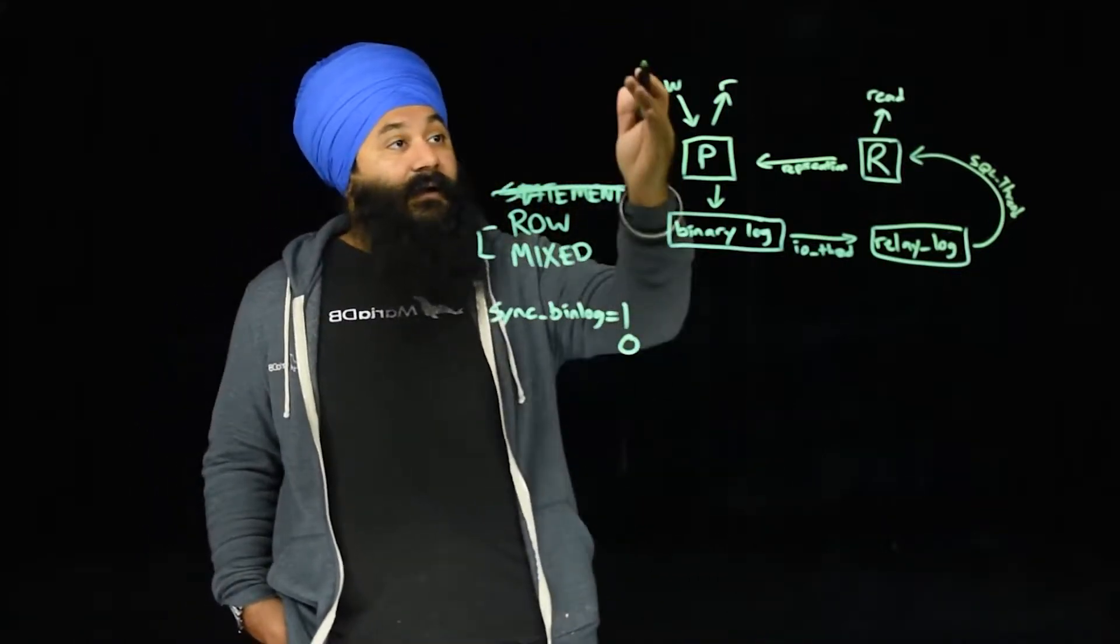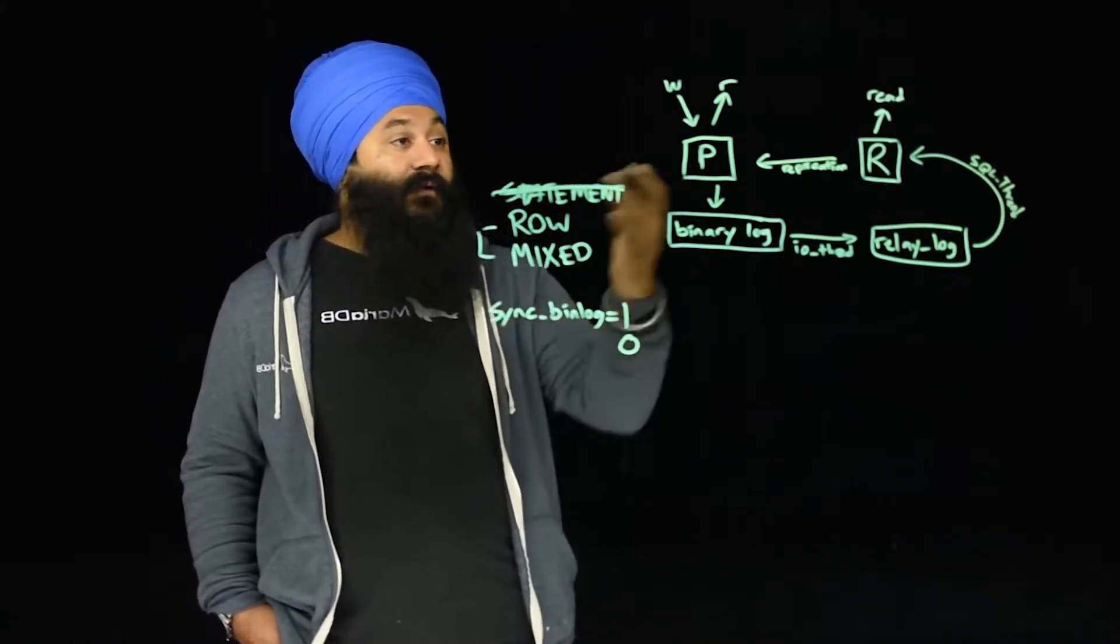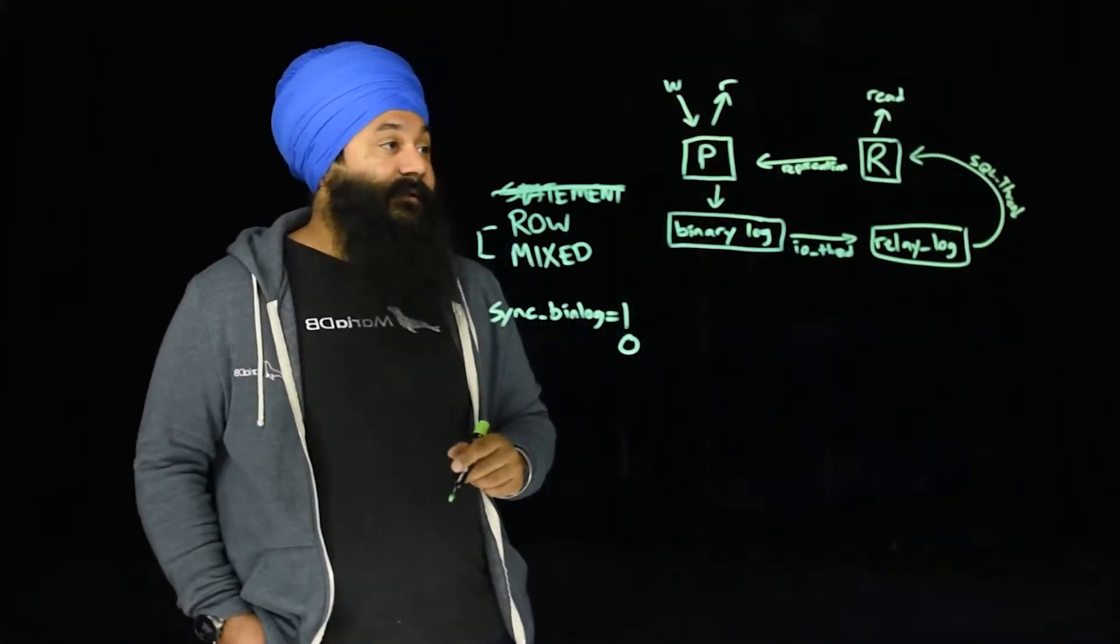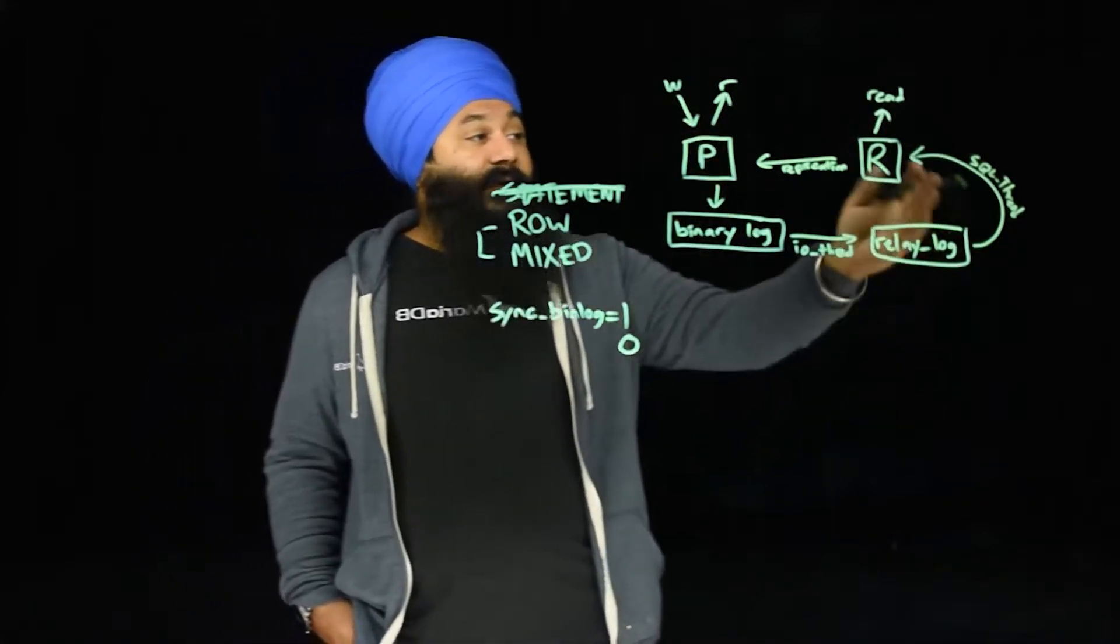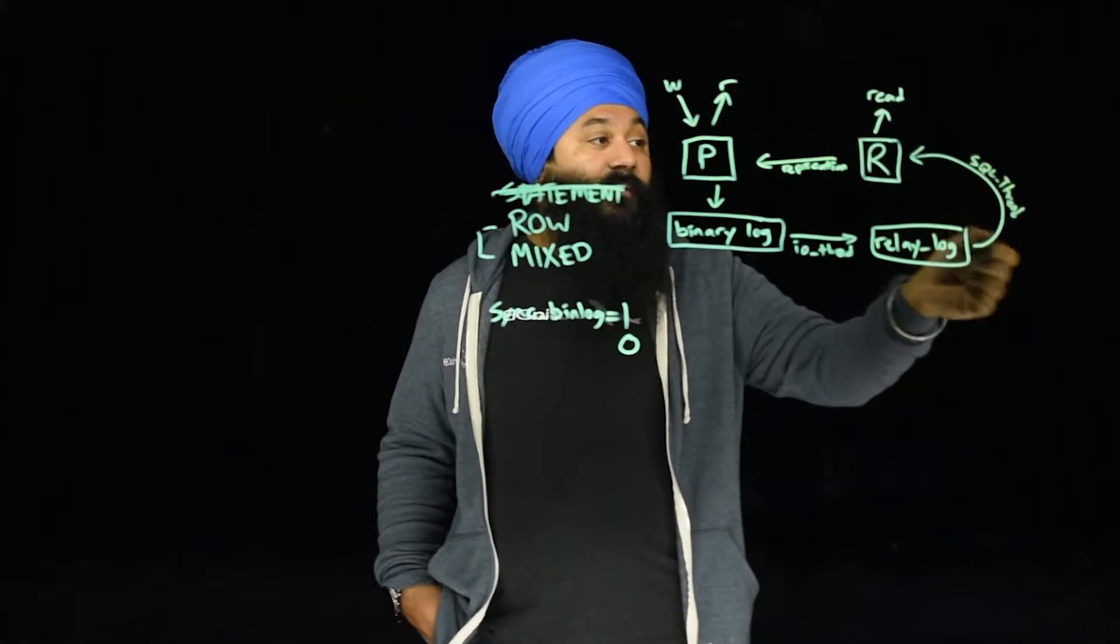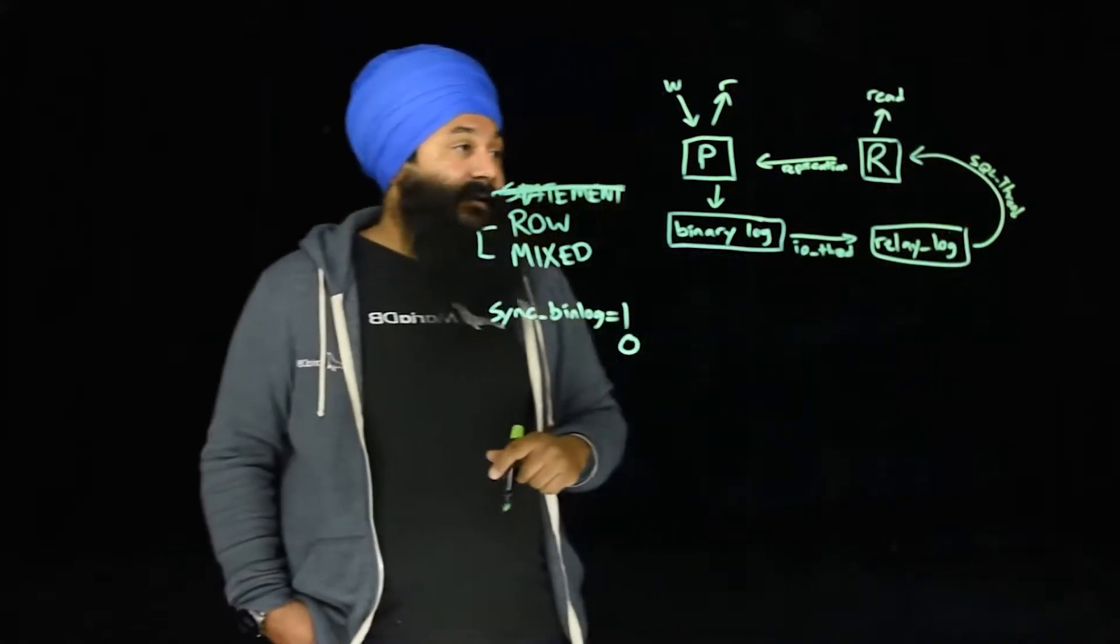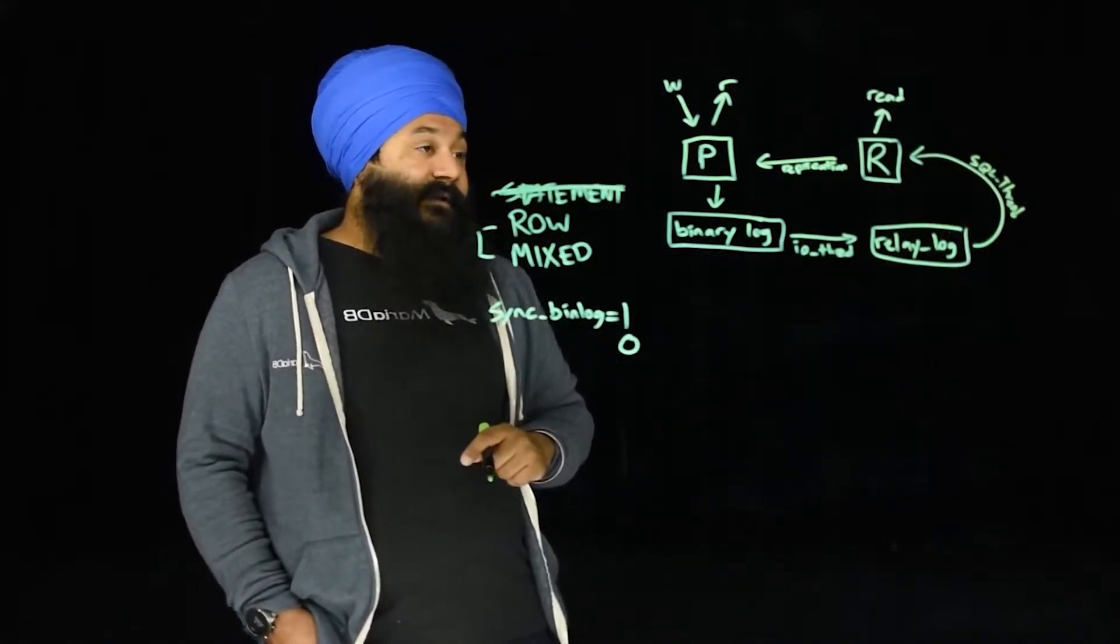which can be a problem based on high workloads. Let's say you have high write workload on the primary. This is where parallel replication will come in and you may have more than one SQL thread applying to that replica.